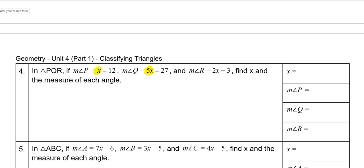x plus 5x is 6x plus another 2x is 8x. Negative 12 minus 27 is negative 39 plus 3 would be negative 36 is equal to 180.